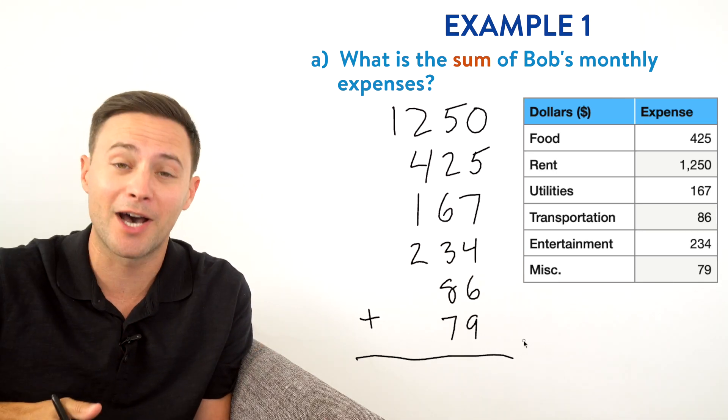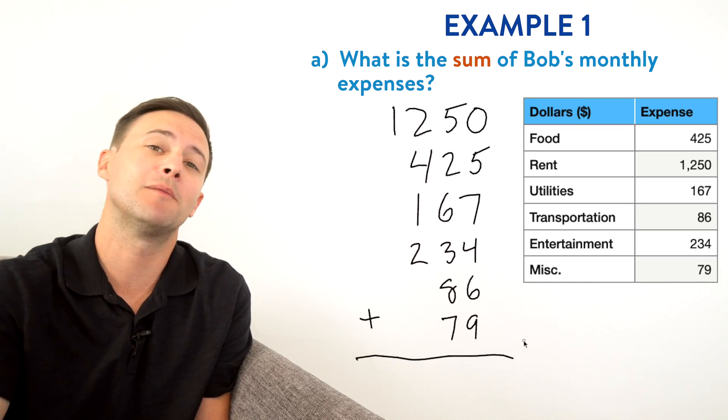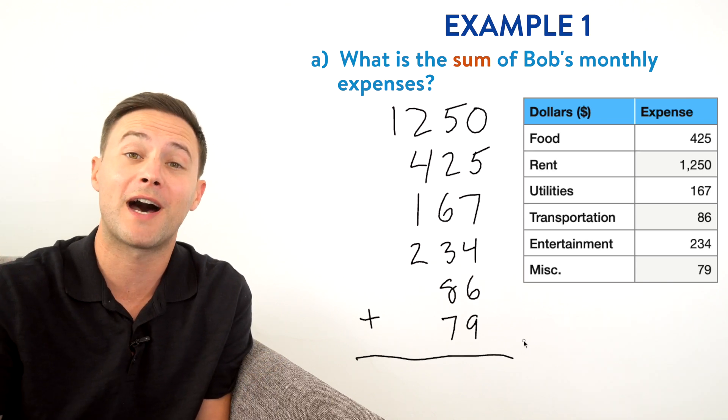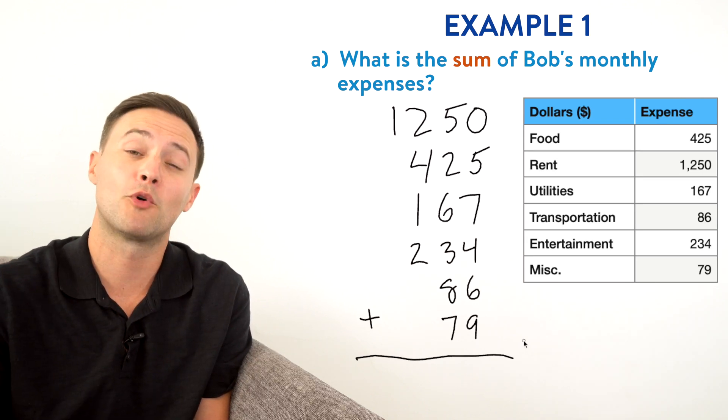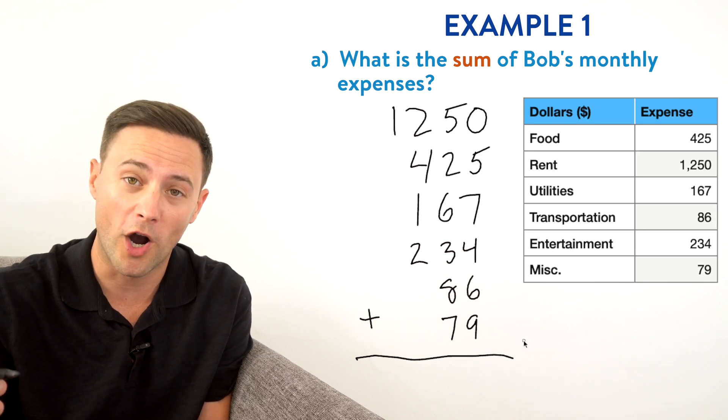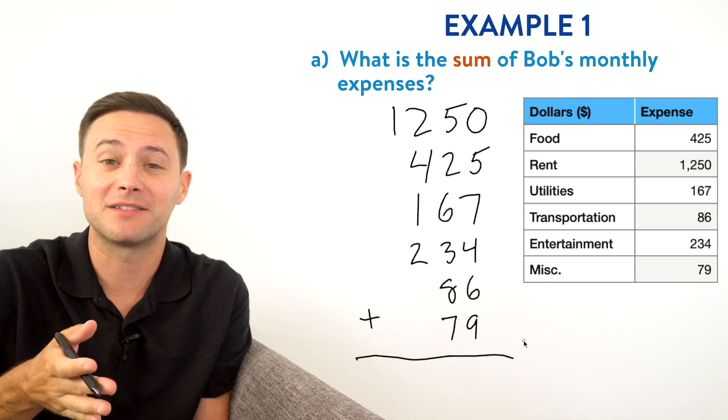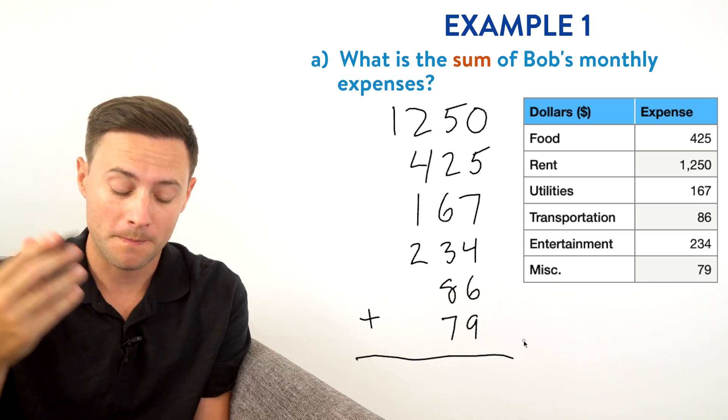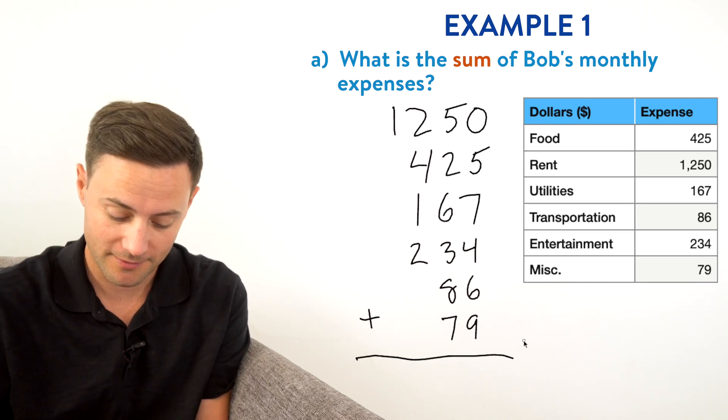So now we're going to just add up column by column starting on the right side and moving our way left. So here we go. In that first column zero plus five is five plus seven is 12 plus four is 16 plus six more gives us 22 plus nine gives us 31. Well, we can't write 31 in the ones place because there's two digits. We only have place for one digit. So what we're going to do is we're going to put the one in the ones place from that 31. Remember that three represents 30.